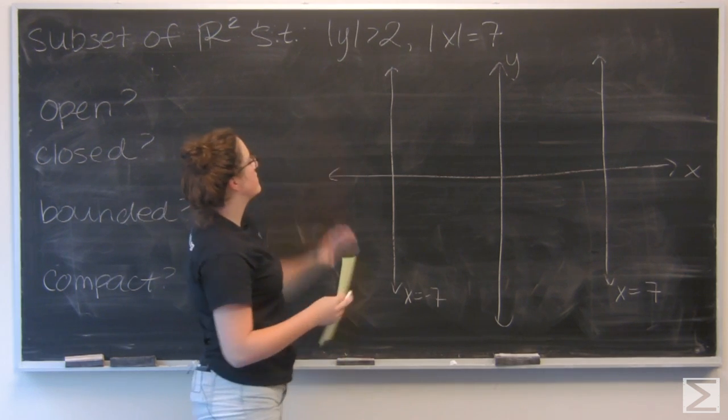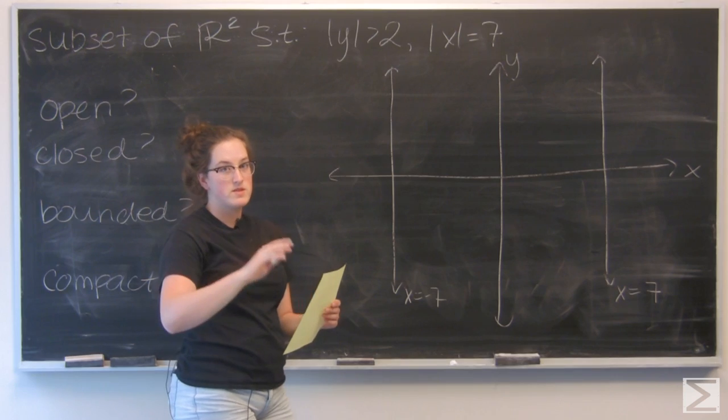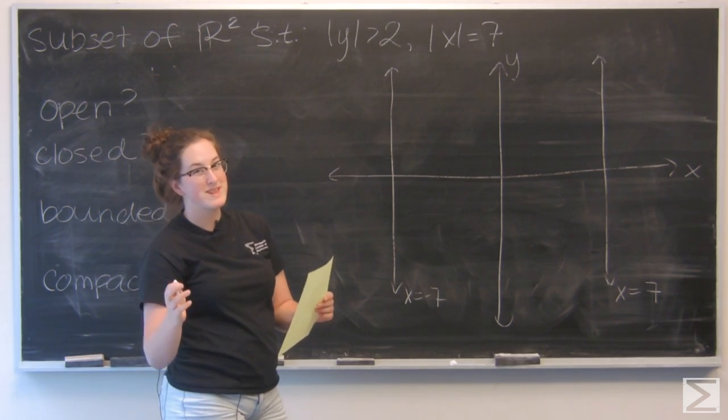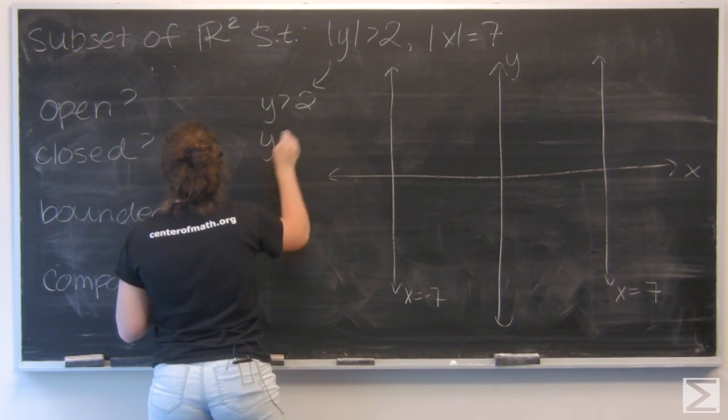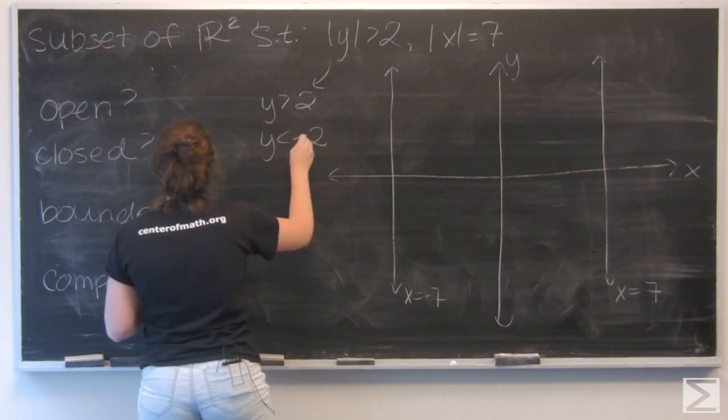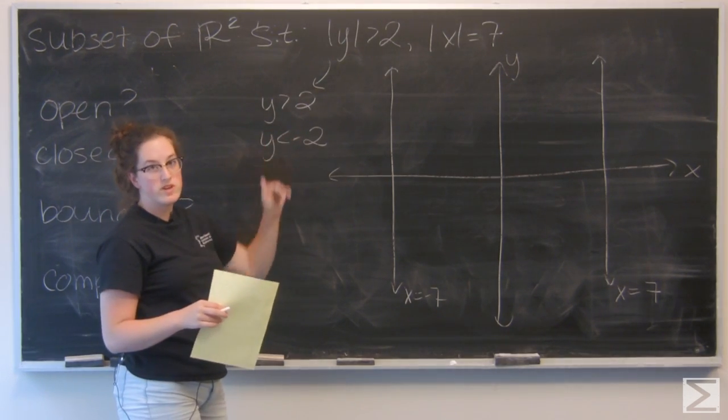Now for the absolute value of y greater than 2, I have two options. y can be greater than 2 or y can be less than negative 2. Notice that's not inclusive. y is not going to be equal to 2 or equal to negative 2.